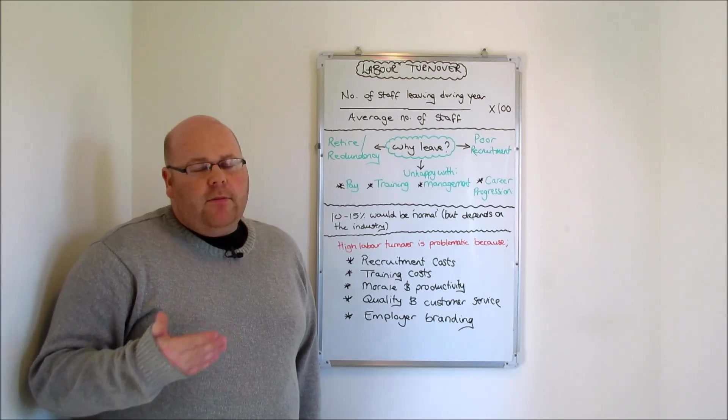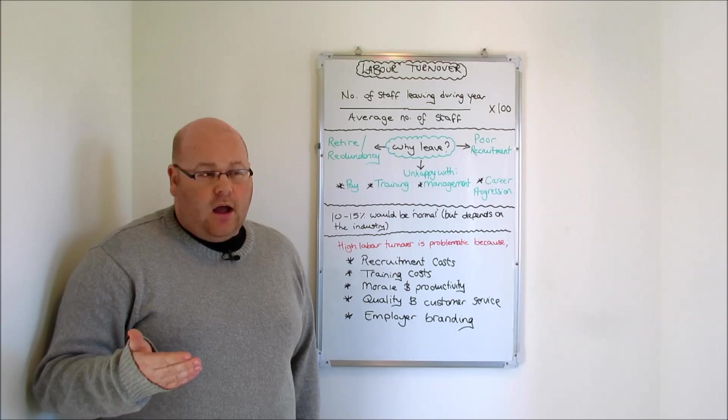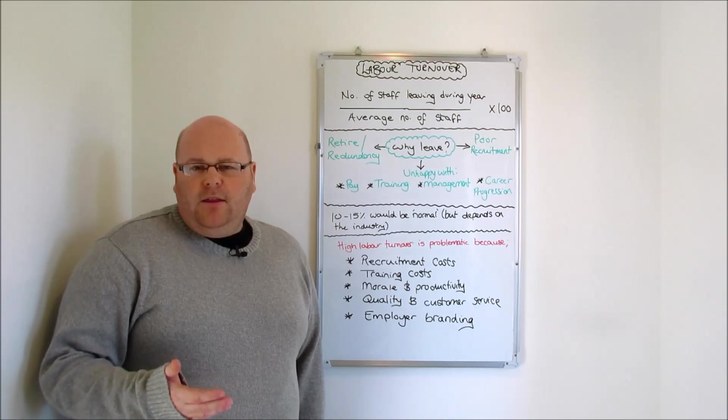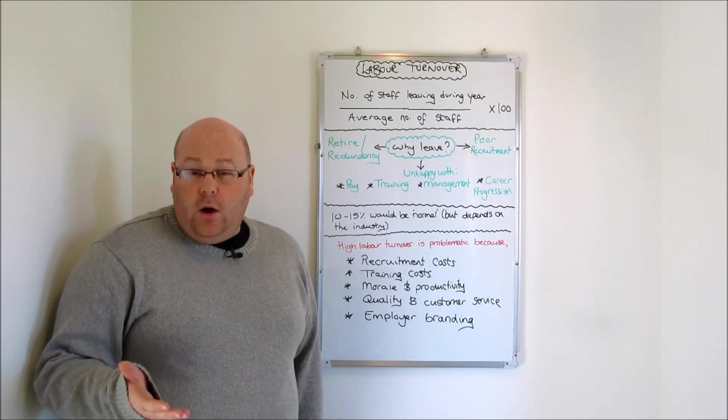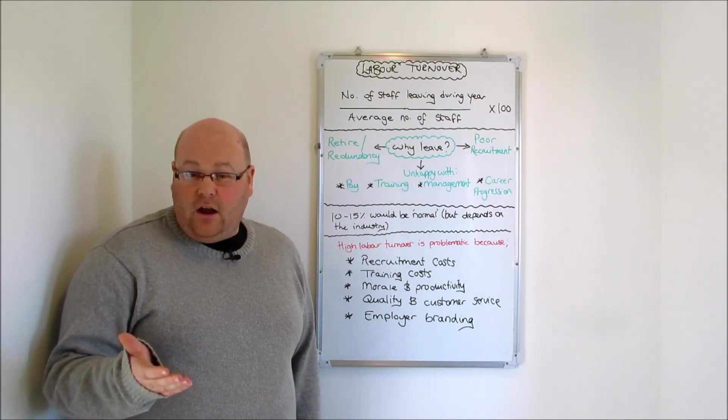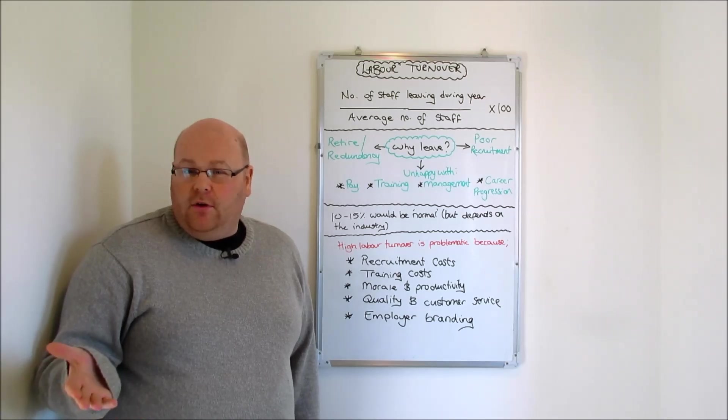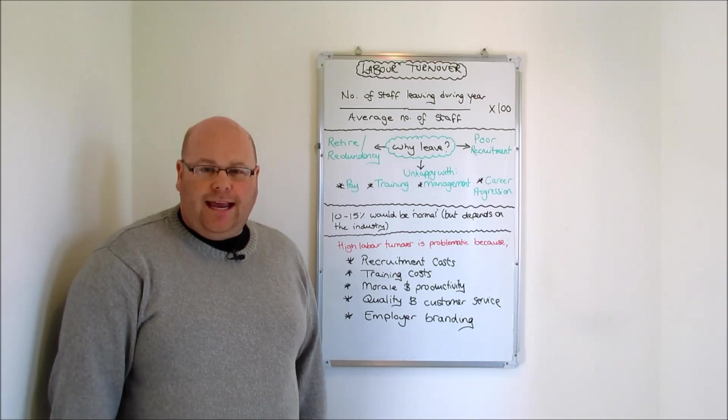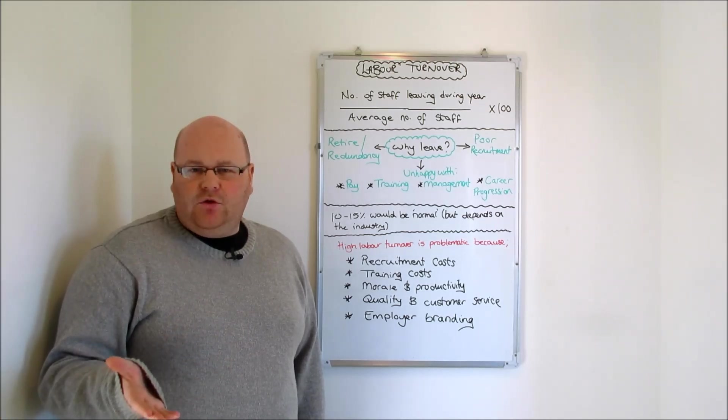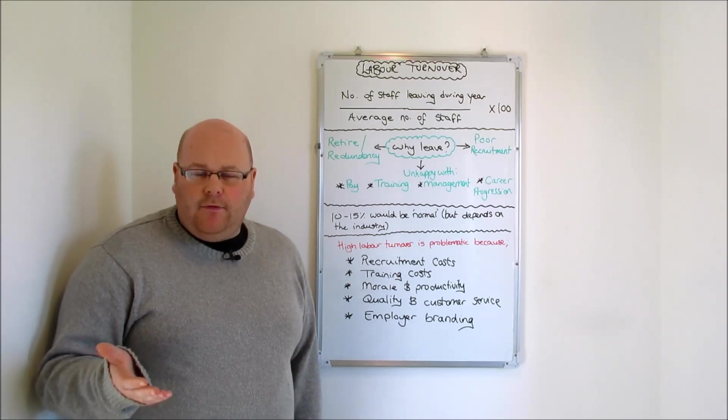Now the number of employees that might leave an organisation that would constitute a high turnover of staff is going to vary from industry to industry. It might be that if we're a supermarket employing lots of students who naturally progress to different pathways like higher education, we might acknowledge that we're going to naturally have a higher labour turnover than firms in some other industries. But as a general rule of thumb, if the percentage of staff leaving during a year is pitched somewhere between 10 and 15 percent, that would be a typical figure.